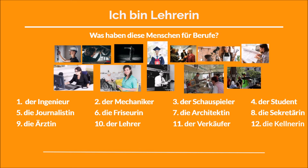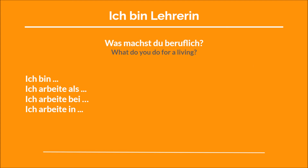Now let's look at how we use professions in German when we want to say what we do for a living. The question is: was machst du beruflich? — What do you do for a living? One way to answer is by starting with ich bin: ich bin Lehrer, ich bin Student, ich bin Mechaniker. You can also say what you learned as a profession — for example, if you work as a waiter, you could say ich bin Gastronom or ich bin Fachwirt in Gastronomie.